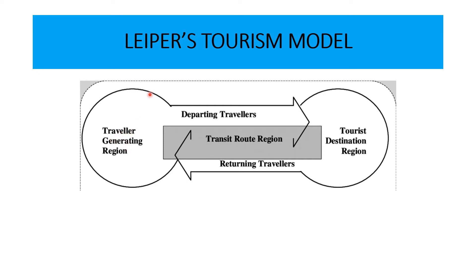Now where are they traveling to? Let's follow the arrow. They are going towards the tourist destination region, and the TDR is known as the host country. The host country has the products and services — the different things that attract persons to that destination. What are some of the things in your country that attract people from the TGR? I can think of our rivers here in the Caribbean, our culture or food, the different events that happen here, or accommodation. There are so many things that attract people to the tourist destination region.